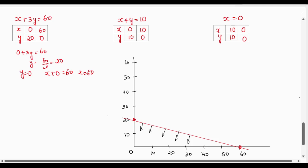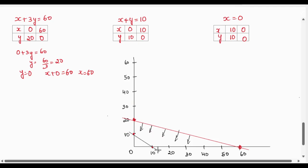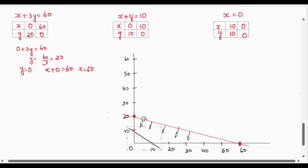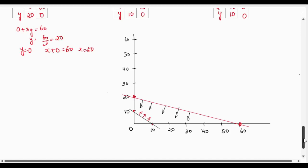For the second equation x + y = 10: when x = 0, y = 10, and when y = 0, x = 10. We draw the line joining these points. Since the constraint is x + y ≥ 10, we shade the area above the line.